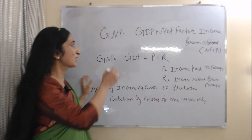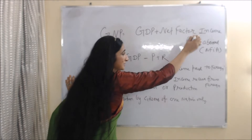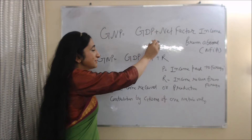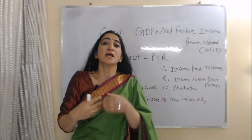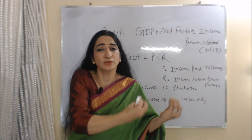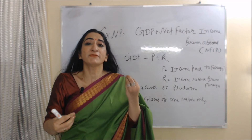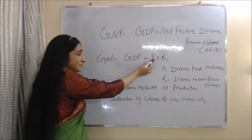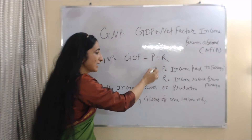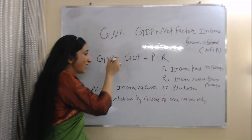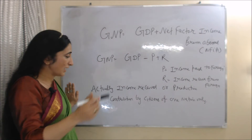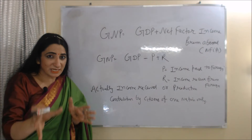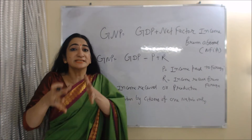Now the formula of GNP: GNP = GDP + Net Factor Income from Abroad (NFIA). Net factor income from abroad is the difference between factor income received from abroad and factor income paid to abroad. We can also write GNP = GDP − P + R, where P is income paid to foreign and R is income received from foreign. When we subtract income paid to foreign and add income received from foreign, we calculate income and production contribution by citizens of one nation only.